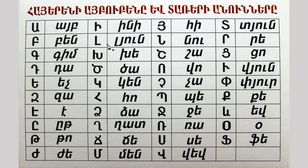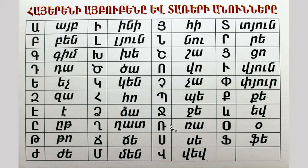The letters are written by the numbers: C, K, H, Z, G, M, Y, H, N, S, V, C, P, G, R, S, C, V, T, D, R, C, U (or Vyun), P, K, Y, O, F.